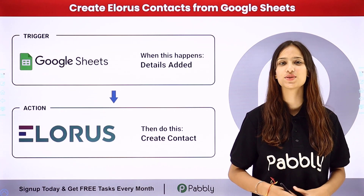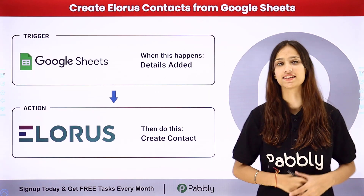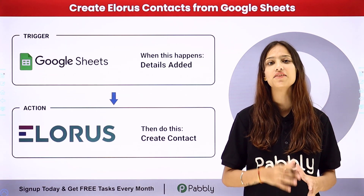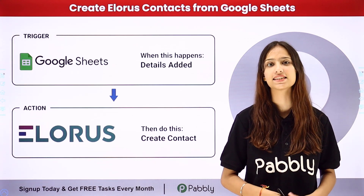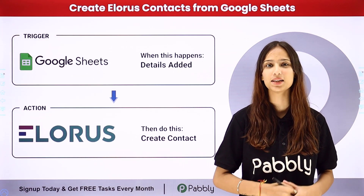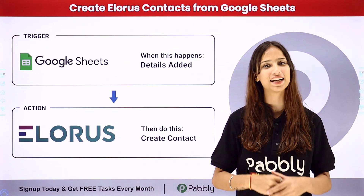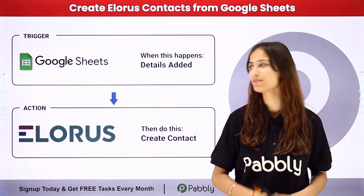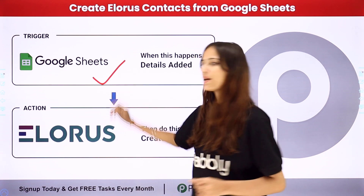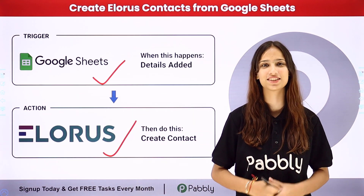Hello everyone, welcome back to Pabbly. In today's video we will understand how to create Allorus contacts from Google Sheets. In a Google Sheet I maintain the lead details, and my objective is that whenever I add new lead details, I wish to create that lead as a contact in Allorus. To do this, I need to set up a connection between these two applications using Pabbly Connect, which follows the concept of trigger and action. My trigger application will be Google Sheets and my action application will be Allorus.